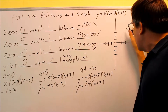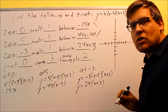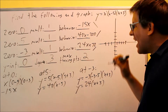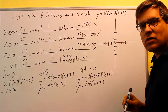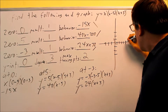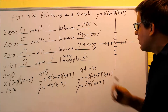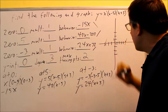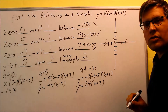Now that we have these behaviors, we're ready to draw the graph by sketching these in. Negative 15x is a negative slope, so it slants to the left. The behavior at five is positive slope — leans to the right. The behavior at negative three, 24x plus 72, also leans to the right. Drawing those little sketches in at each of the zeros gives us an overall idea of what the graph is going to look like.